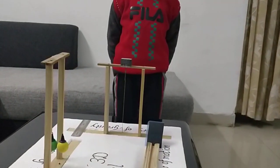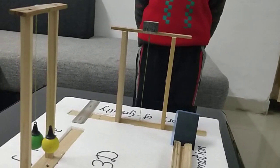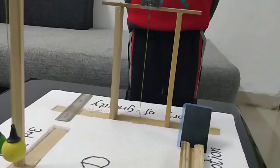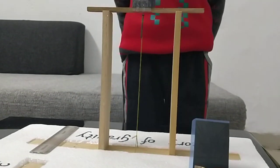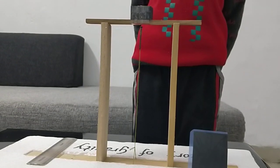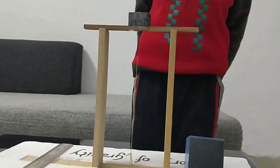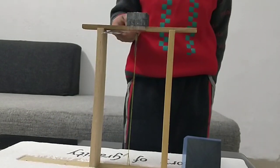It says that whatever we throw up comes down. As you all can see, this magnet is pulling the nail upwards but the earth's gravitational force is pulling the nail down. That is why the nail is in the air.